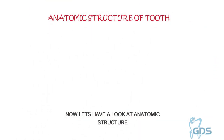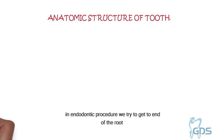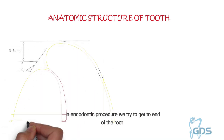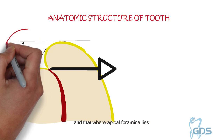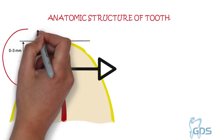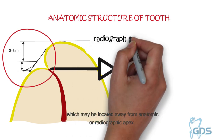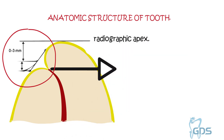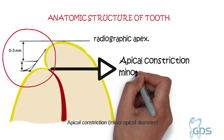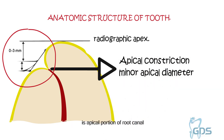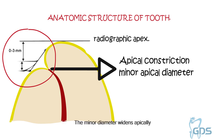Now let's have a look at anatomic tooth structure. In endodontic procedure, we try to get to the end of the root, and that is where apical phenomena lies. The apical foramen is the main apical opening of the root canal which may be located away from the anatomic or radiographic apex. The apical constriction, or minor apical diameter, is the apical portion of the root canal having the narrowest diameter. It is usually 0.5 to 1 mm short of the apical foramen.